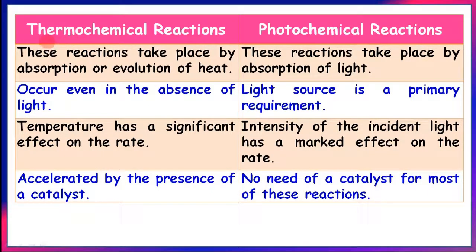Differences between thermochemical and photochemical reactions: thermochemical reactions take place by absorption or emission of heat, while photochemical reactions take place by absorption of light. Thermal reactions occur even in the absence of light; photochemical reactions take place only in the presence of light. Temperature has a significant effect on the rate of thermal reactions, but little or no effect on the rate of photochemical reactions. However, the intensity of incident light has a marked effect on the rate of photochemical reactions.